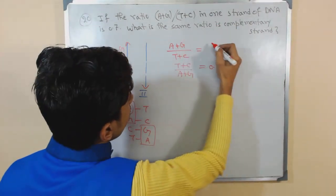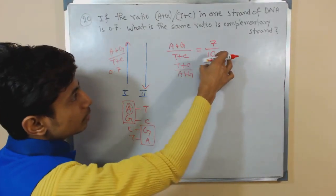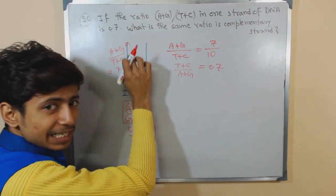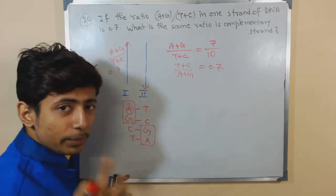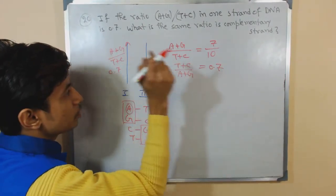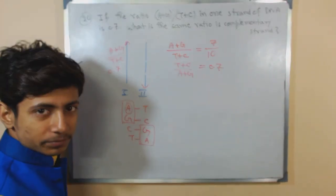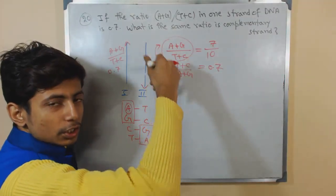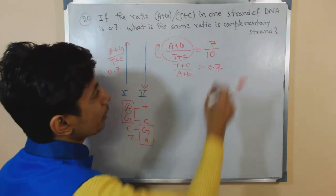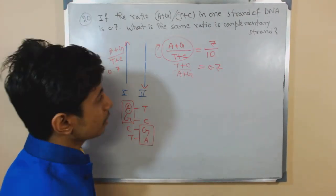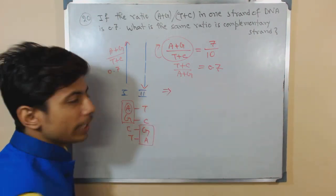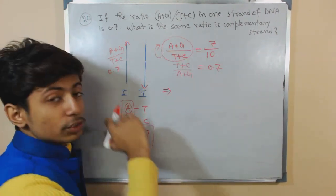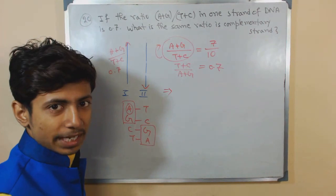The value 0.7 means 7 by 10. That means thymine and cytosine are more in this strand, and therefore thymine and cytosine will be less in the other strand. Swapping these results, in the opposite DNA the same ratio of 0.7 will apply to thymine plus cytosine by adenine plus guanine instead of adenine plus guanine by thymine plus cytosine.